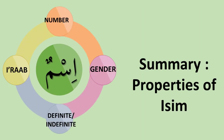So far, you've been taught that every isim has four grammatical properties, and we've discussed three of them. We'll do a quick recap.